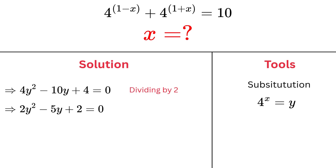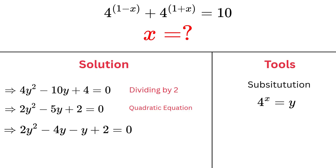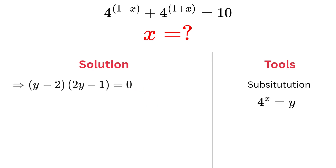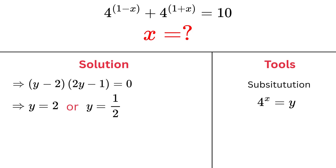Step 4: Solve the quadratic. Time to factor — we split the middle term: 2y squared minus 4y minus y plus 2 equals 0. Now group the terms: 2y times (y minus 2) minus 1 times (y minus 2). That gives us (y minus 2)(2y minus 1) equals 0. Solving this, we get two values for y: y equals 2, or y equals 1 half.